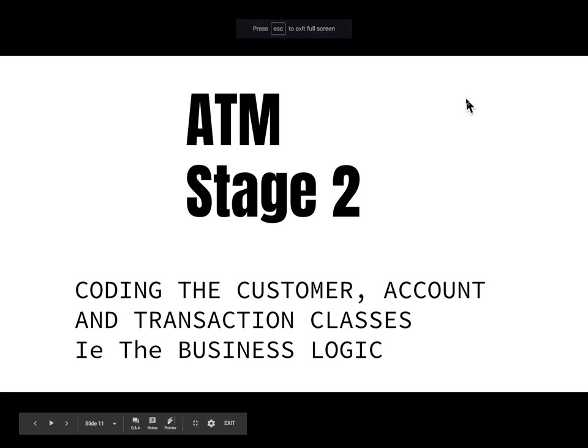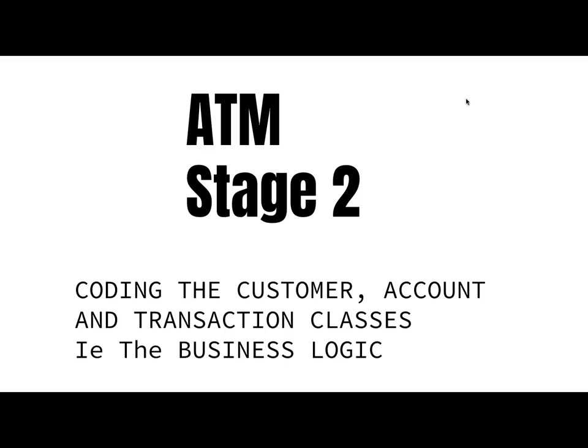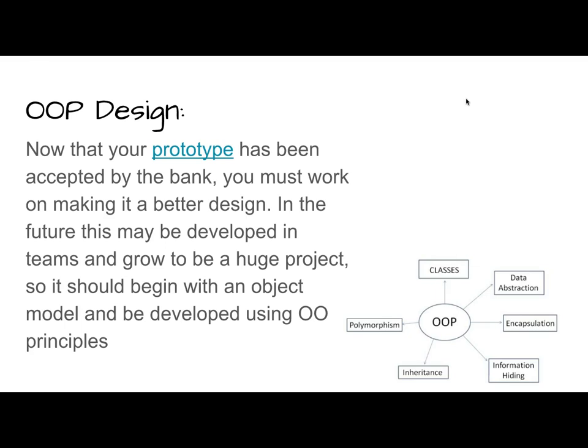The second stage of this project is splitting what you've done so far into three different classes. This is going to work behind a GUI, which is stage 3. We need a customer class to hold details about the customer, an account which holds details about the different things on the level of the account, and transactions. The prototype so far has been accepted by the bank, but they need to make it a large scale system, so you're going to be using OOP.